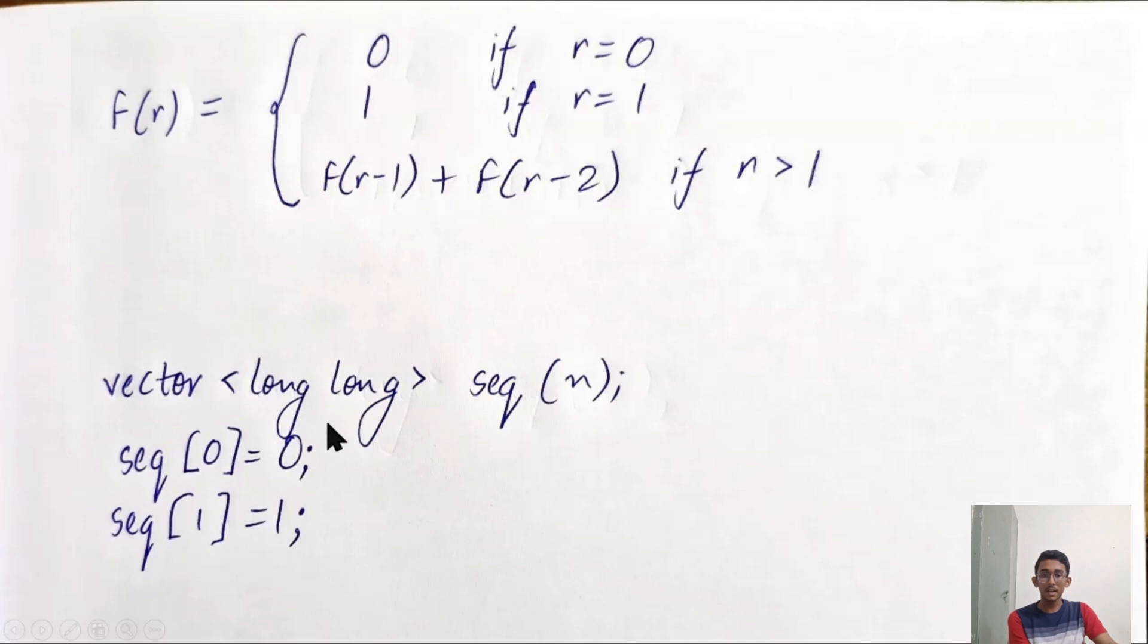So we'll define the vector named sequence, seq for short, which stores the data type long long. I've used long long here so that I can reduce the risk of overflow, because the Fibonacci sequence goes big very fast. And I've taken this for n terms. I have to store n terms in this vector, and I take that input n from the user.